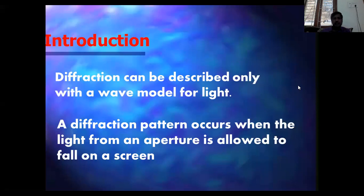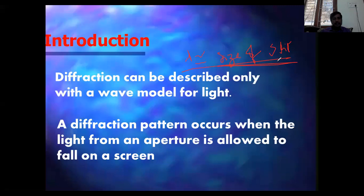What is the condition to have diffraction? Lambda should be equal to, or approximately equal to, the size of the slit or aperture. This condition is very important: the wavelength of light must be approximately equal to the size of that slit or aperture for a diffraction pattern to occur.